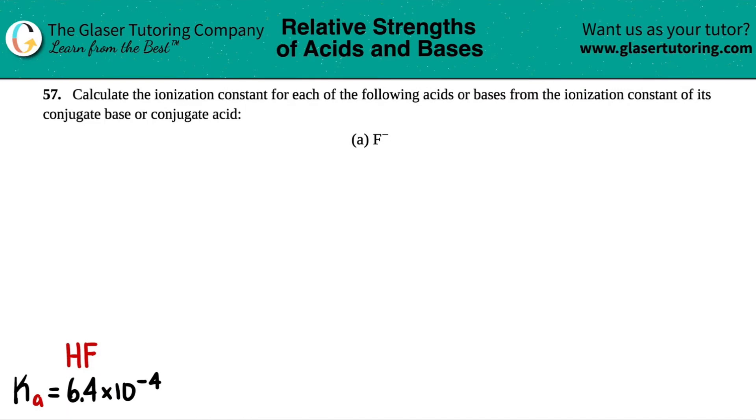Number 57. Calculate the ionization constant for each of the following acids or bases from the ionization constant of its conjugate base or conjugate acid. Then we have letter A.